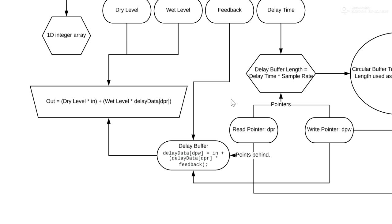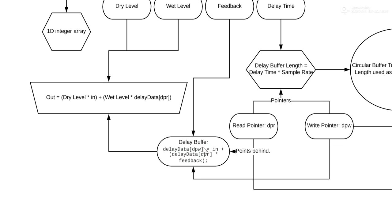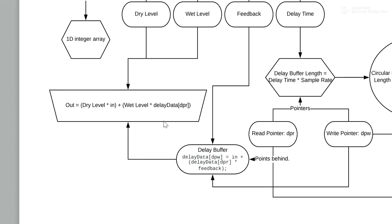The delay buffer is where we store the signal with the delay. The write pointer determines the index we want to write to, and the read pointer points behind the write pointer, so we have the same audio signal added to the delay — we simply add them, that's how audio works on computers. From that, it contributes back to the main equation where we calculate the actual delay signal, and then this creates our output.